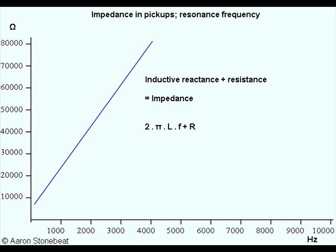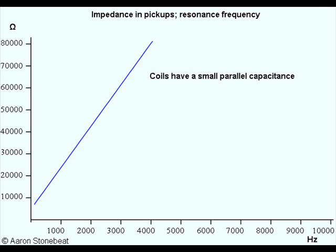So there you have it — impedance in less than 3 minutes. But now, every coil also has some parallel capacitance, which arises from the turns of the coil being close together. In addition, every guitar cable has a certain parallel capacitance, which arises basically for the same reason — it's the core and the mantle of the cable being close together. As an example, I've taken the capacitance of the pickup and the cable together at 1 nF.